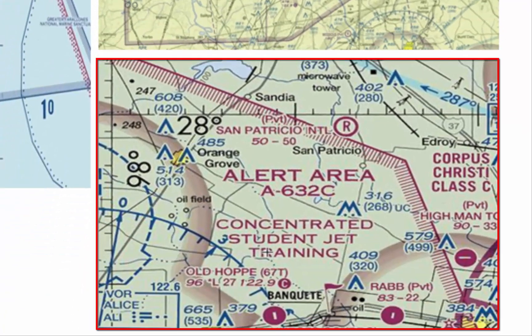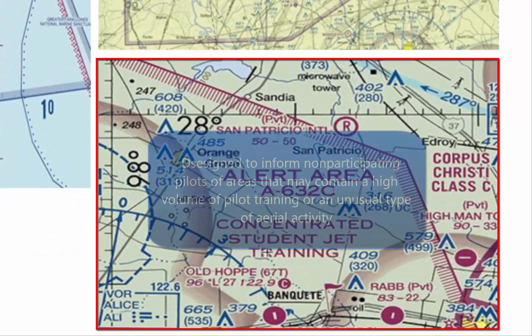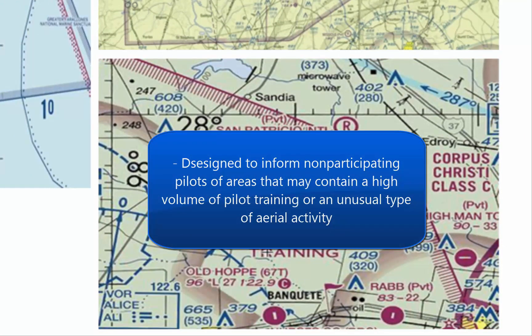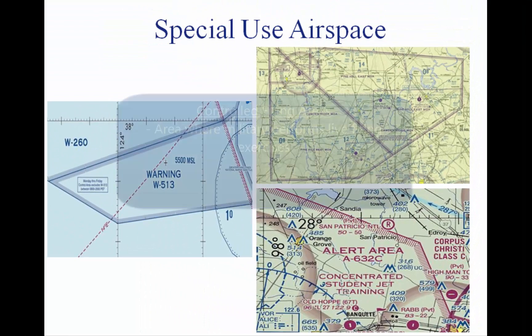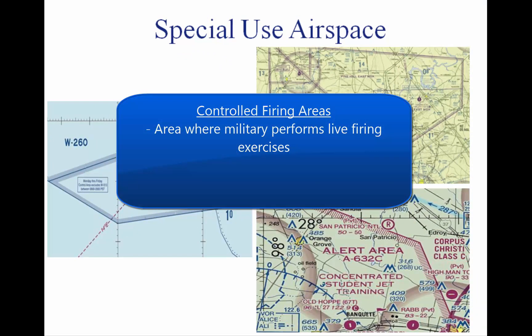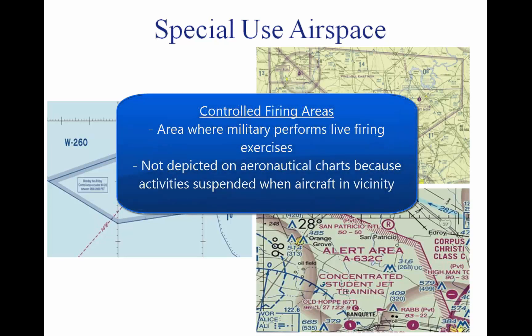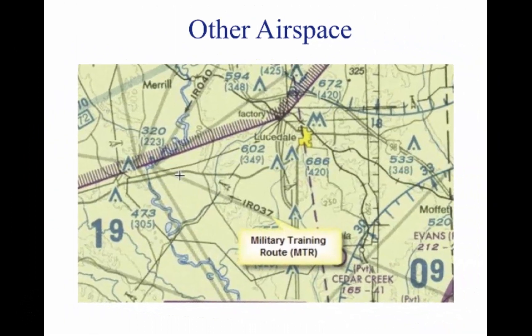Alert areas, pictured on the lower right, are designed to inform non-participating pilots of areas that may contain a high volume of pilot training or an unusual type of aerial activity. Controlled firing areas contain activities which, if not conducted in a controlled environment, could be hazardous to non-participating aircraft. These areas do not need to be charted because activities are suspended when aircraft are in the vicinity.